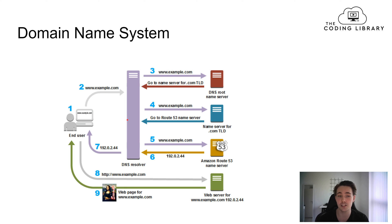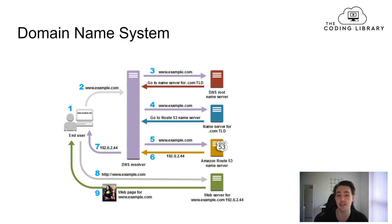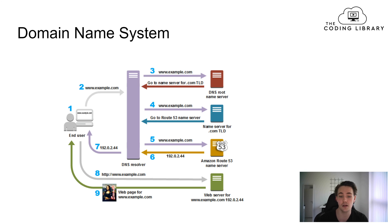We've covered some basic networking concepts in Linux, including the Domain Name System and how we get an IP address, the difference between TCP and UDP, how these protocols work, and some different applications for each.